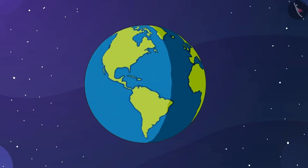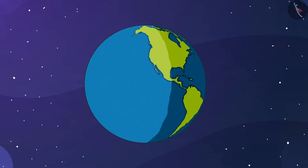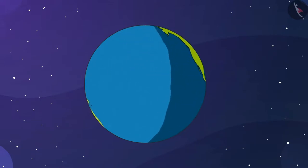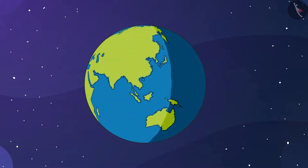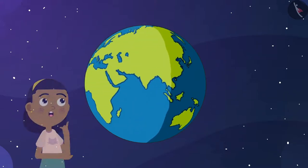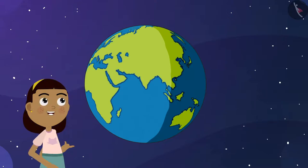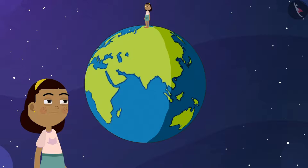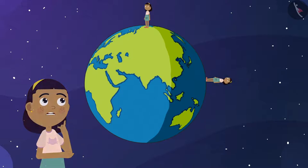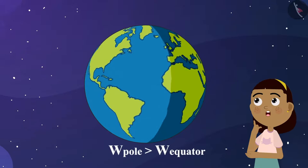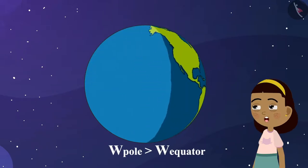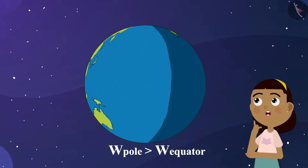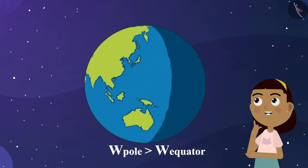We learned in the previous chapter that the value of acceleration due to gravity is more at the poles than at the equator. Considering that, where do you think you will weigh more — at the north pole or at the equator? Your weight will be more at the north pole than at the equator, but keep in mind that the difference will be relatively small.